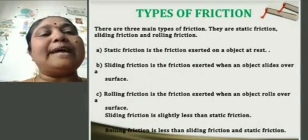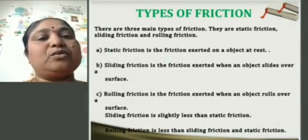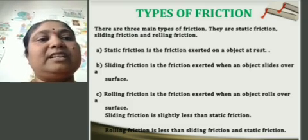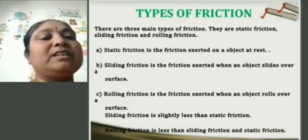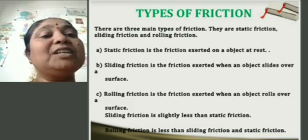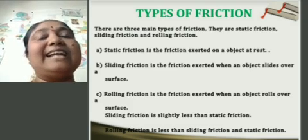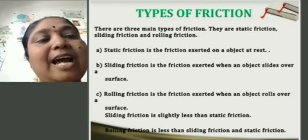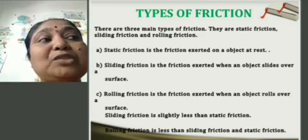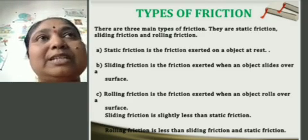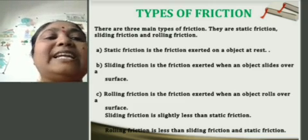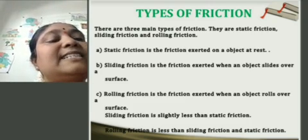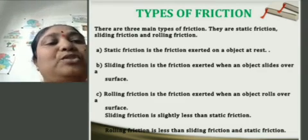Now let's look at the types of friction. We mainly have three types of friction: static friction, sliding friction, and rolling friction. For static friction, if you comb your hair and bring the comb near pieces of paper, the paper is attracted toward the comb. That force is the static friction. Static friction is the friction exerted on an object at rest.